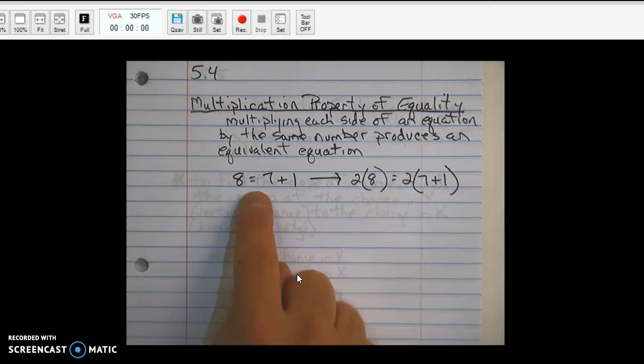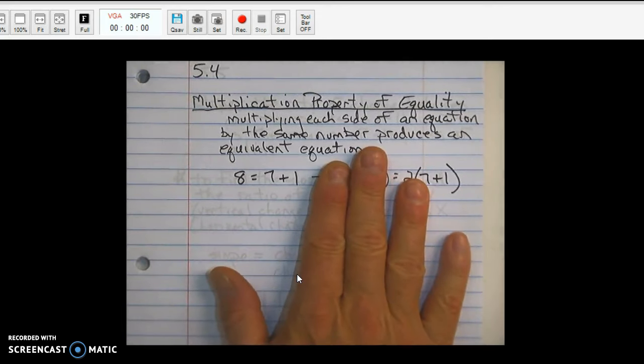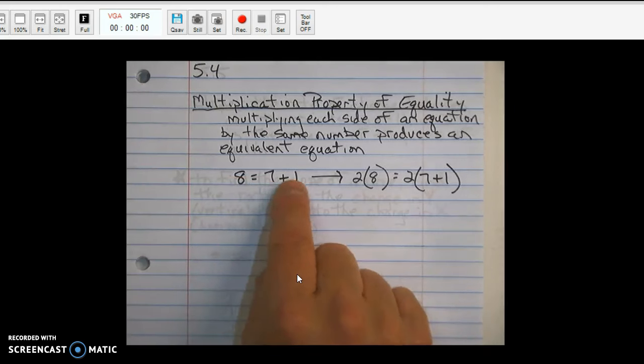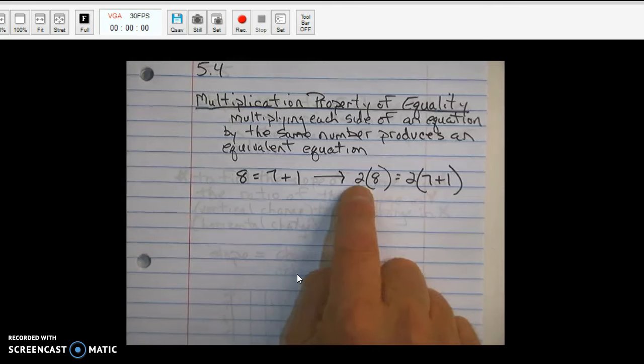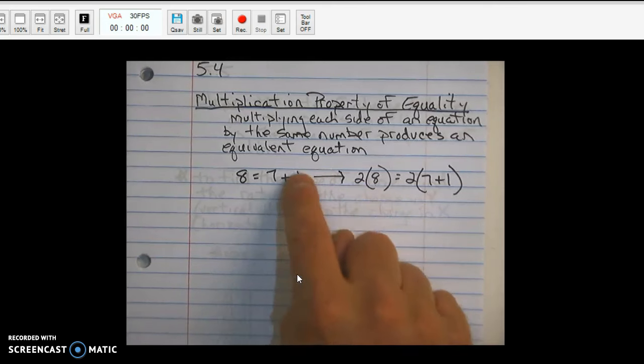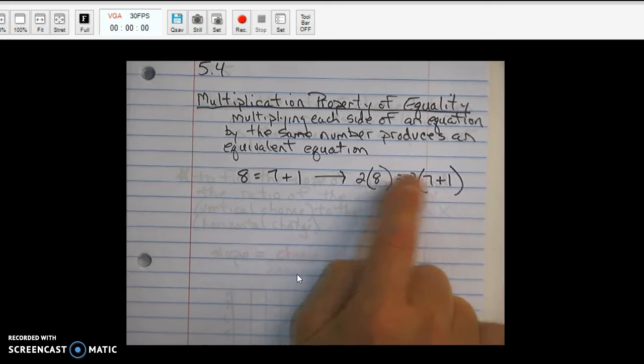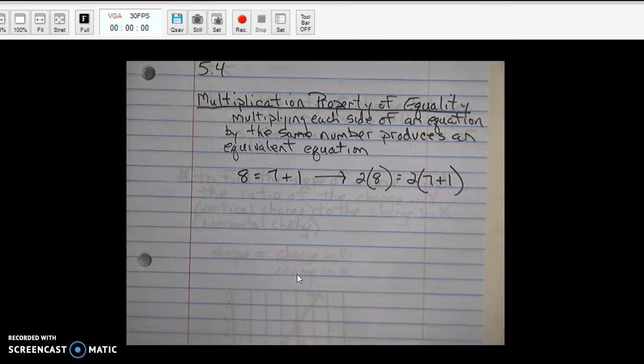Multiplying each side of an equation by the same number produces an equivalent equation. So, let's look at this. Look at just this one. 8 equals 7 plus 1, right? 8 is the same thing as 7 plus 1. Those are equivalent. Multiply the 8 by 2 and the 7 plus 1 by 2. It's the same thing. This is still an equivalent expression, right? That equals 16. That equals 16.